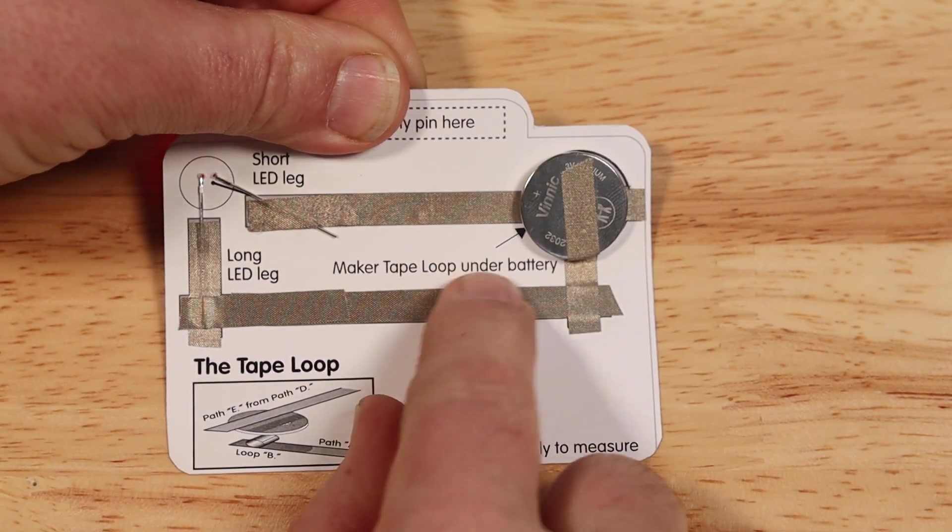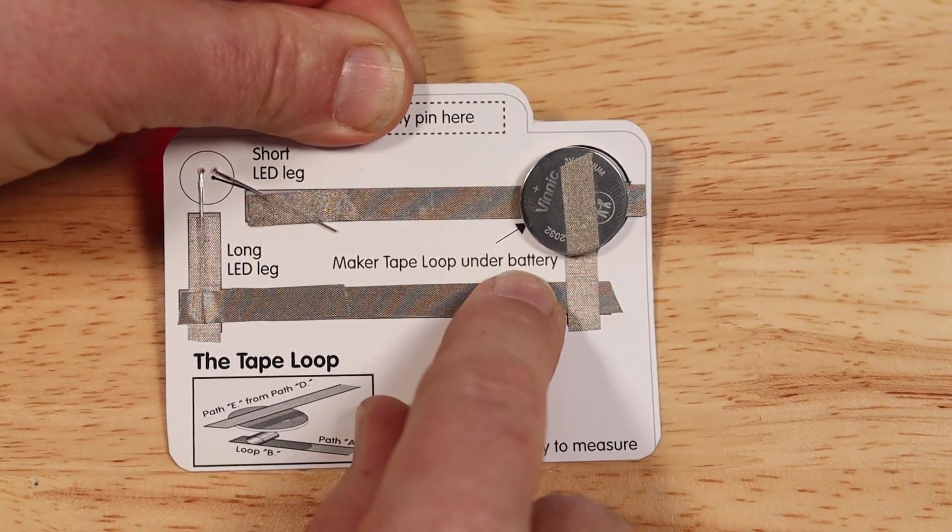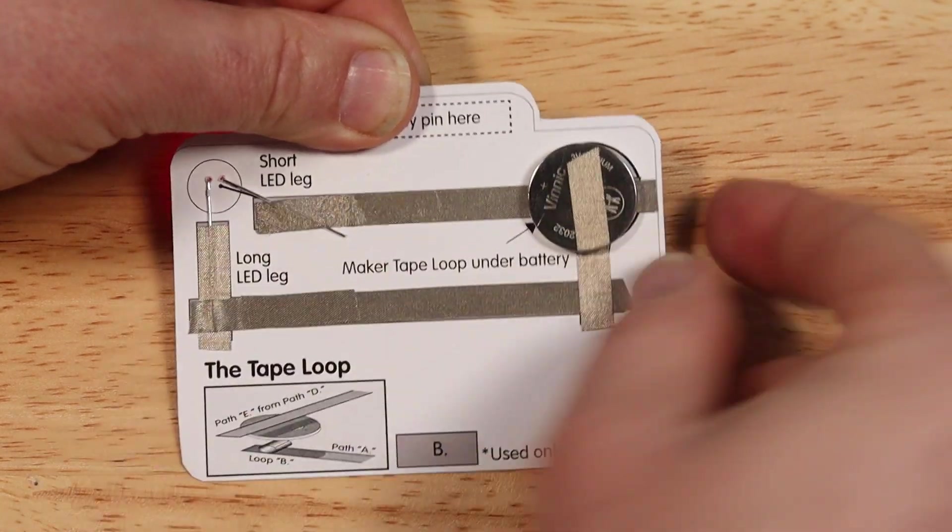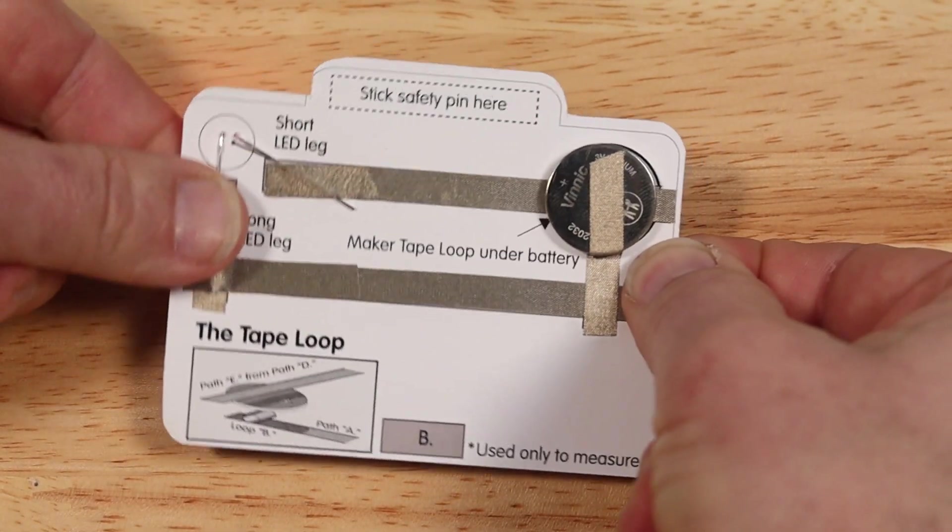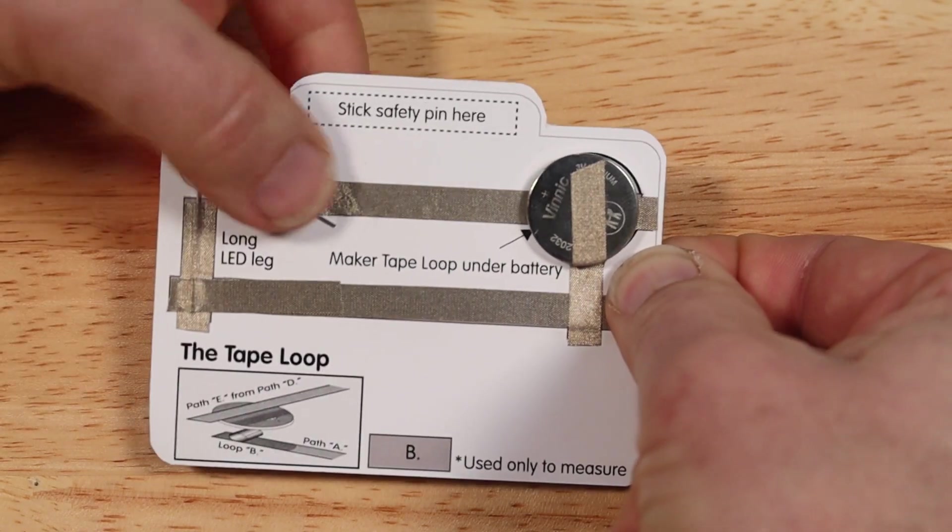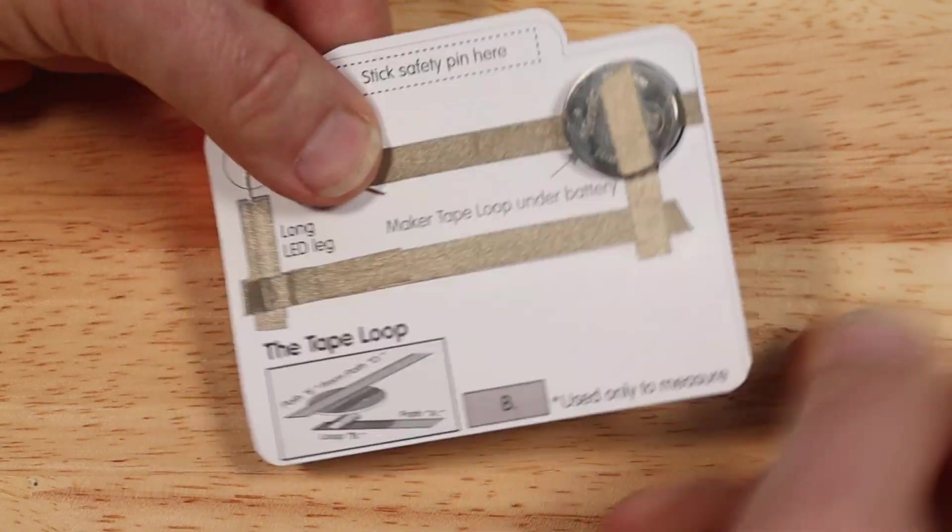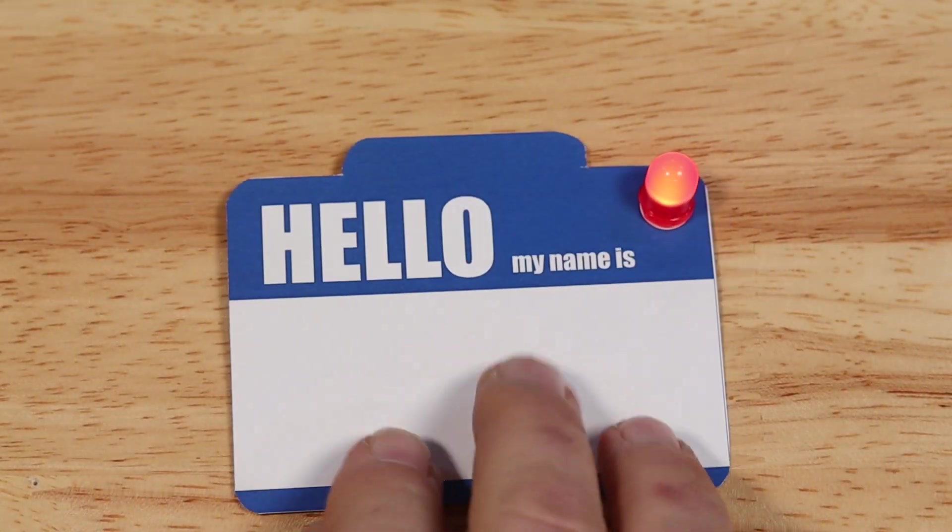Anywhere maker tape overlaps, rub it down to press the two pieces together. At the LED, make sure to press the maker tape down over the legs of the LED. With good connections, the LED will light up.